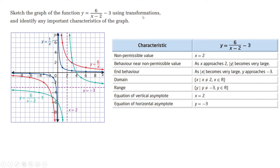In grade 12 we can combine function transformations with rational functions. To draw y = 6/(x − 2) − 3, we start from y = 1/x. A vertical stretch by a factor of 6 gives us y = 6/x. Then (x − 2) shifts the graph 2 units to the right, and subtracting 3 moves it 3 units down.